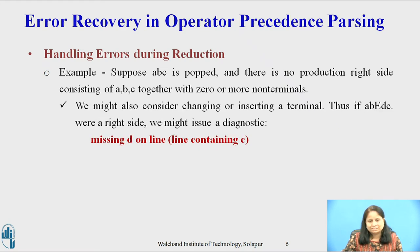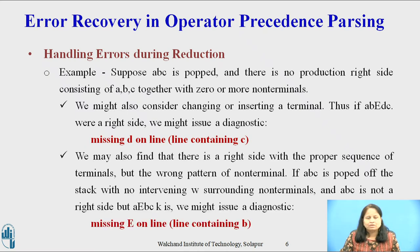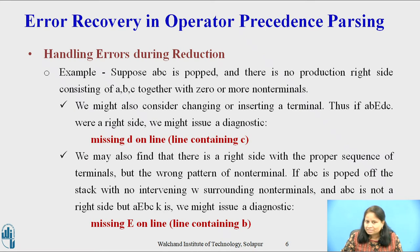We might also consider changing or inserting a terminal. Thus, if A, B, E, D, C were a right side, we issue the diagnostic 'missing D on line'. We may also find that there is a right side with the proper sequence of terminals but a wrong pattern of non-terminals. If ABC is popped from the stack with no intervening non-terminals and ABC is not a right side, but A, E, B, C is, we might issue the diagnostic 'missing E on line'.